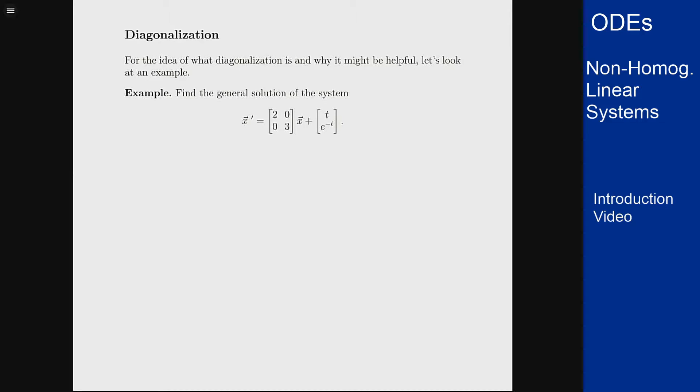If we break this up into different components, this tells us that [x₁'; x₂'] equals [2x₁ + 0x₂; 0x₁ + 3x₂] plus [t; e^(-t)].